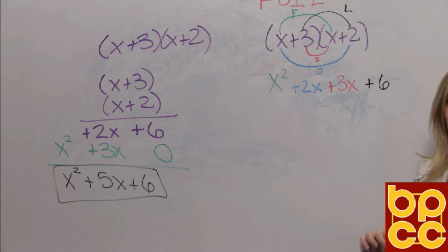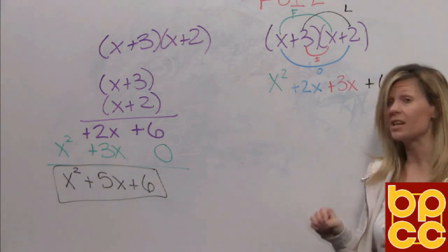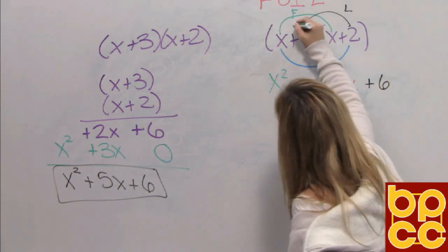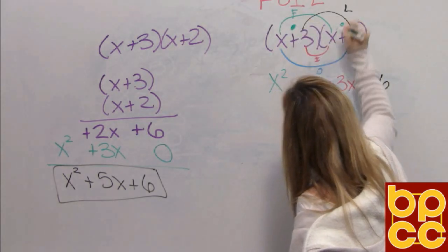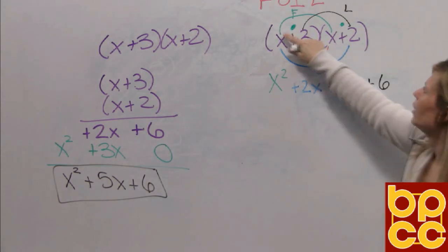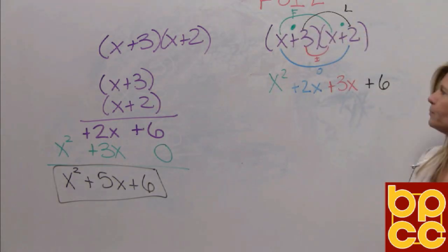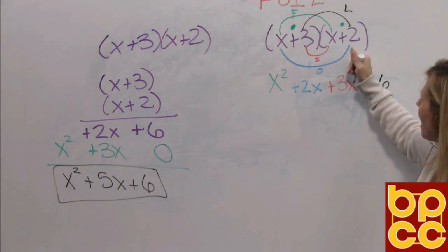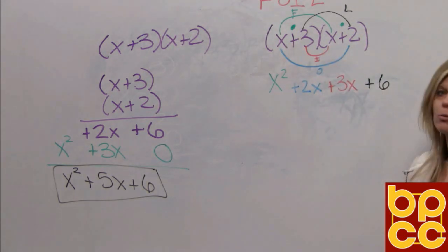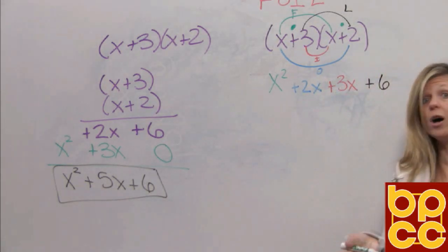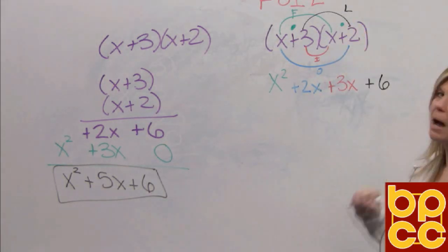Now, if you do FOIL correctly, you will see something really cute up here. You have a little smiley man. If I put some eyeballs up here, you can see. First is his eyebrow. Last is his eyebrow. The outer is his mouth. The inner is his nose. So that's a cute visual to help you. If you do FOIL correctly, you should make the little smiley guy face.